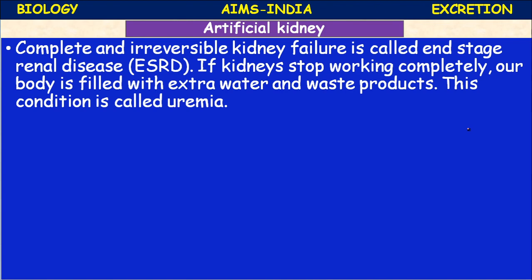If both kidneys fail completely, the condition is called end-stage renal disease (ESRD). When kidneys stop working completely, the body is filled with extra water and waste products. This condition is called uremia.